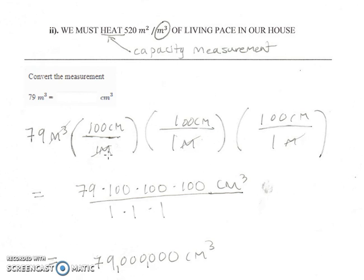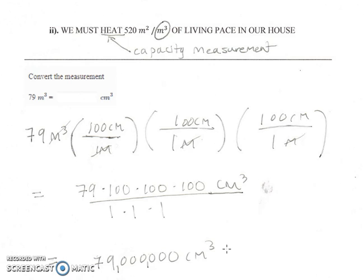We need to multiply by meters three times so that we can cancel those three factors of the original units of meters. We then multiply the original measurement of 79 times 100 three times, and centimeters multiplied three times gives us centimeters cubed. Simplifying, we get this number of centimeters cubed, which is equivalent to 79 meters cubed.